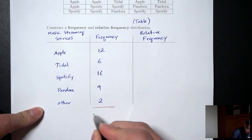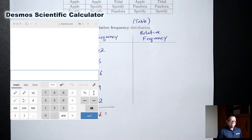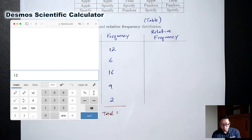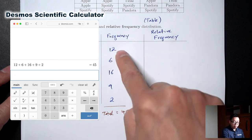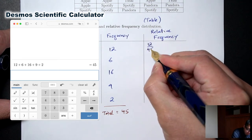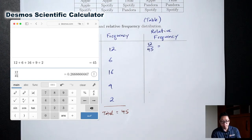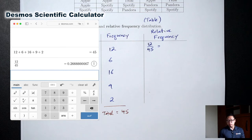You can use any calculator to add this up. The calculator I recommend is called the Desmos Scientific Calculator — I'll include a link to this in the lab. So let's add up our frequencies: 12 plus 6 plus 16 plus 9 plus 2 equals 45. There are 45 people total in our sample. To find the relative frequencies, you're just going to take the frequency and divide it by the total number of people. So 12 divided by 45. We'll agree in this class to round to 3 decimal places. Rounded to 3 decimal places, this is 0.267.